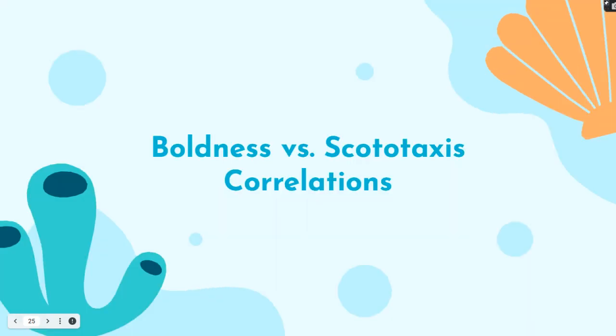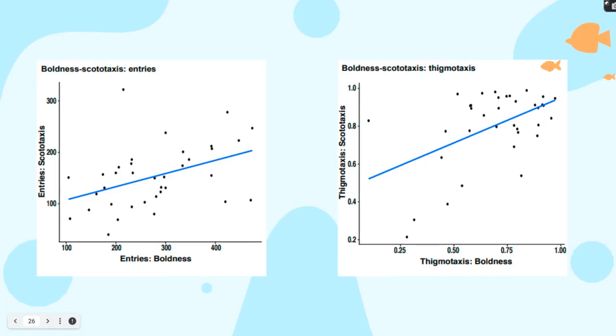In the boldness versus scototaxis correlations, we looked at entries in open field condition versus entries in scototaxis, as well as proportion of time spent in open field thigmotaxis versus time spent in total thigmotaxis in scototaxis. Both results were found to be statistically significant as well.